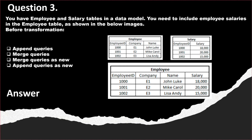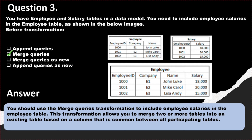Question number 3. You have employee and salary tables in a data model. You need to include employee salaries in the employee table. You have an employee table with employee ID, company, and name, and a salary table with employee ID and salary. You need to create a final table where the employee table has a salary column added. The options are append queries, merge queries, merge queries as new, and append queries as new. The correct answer is merge queries. You should use the merge queries transformation, which allows you to merge two or more tables into an existing table based on a common column.